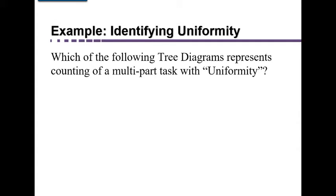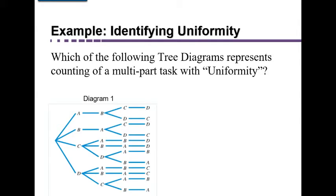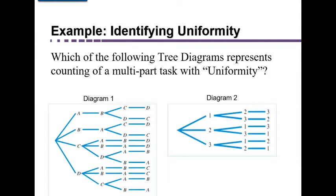Let's look at two tree diagrams to see which of these multi-part tasks have the uniformity we would like. You might recognize this tree diagram from when we were seating Arnie, Bobette, Chuck, and Deirdre in four seats in a theater. The other is a tree diagram for constructing three-digit numbers from the digits 1, 2, and 3 without repetition.